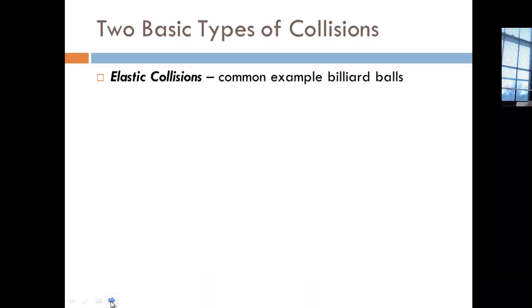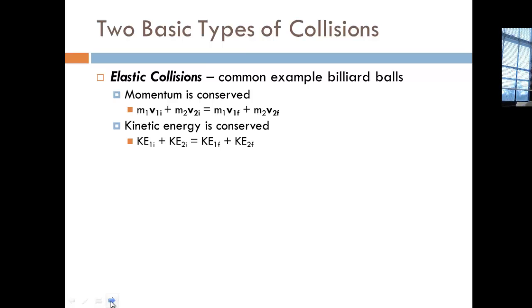Two basic types of collisions. The first type is called an elastic collision and a common example that's given for this in any physics textbook is billiard balls, like you saw pictured on the opening slide. So what's actually conserved?